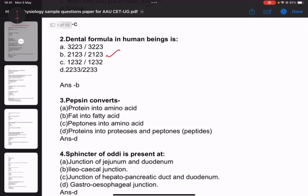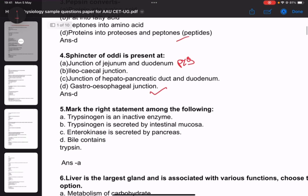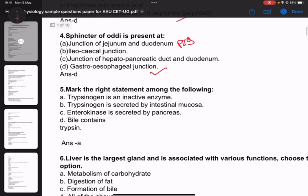Question three: Pepsin converts protein into amino acids and peptones. The sphincter is always present at the gastroesophageal junction. Question five: Mark the right statement among the following - trypsinogen is an inactive enzyme.